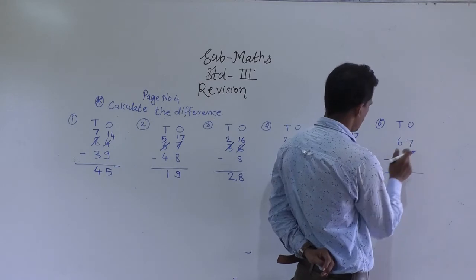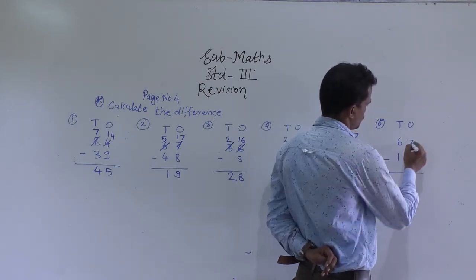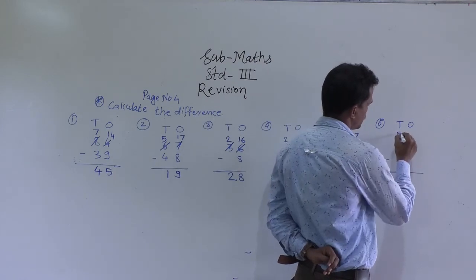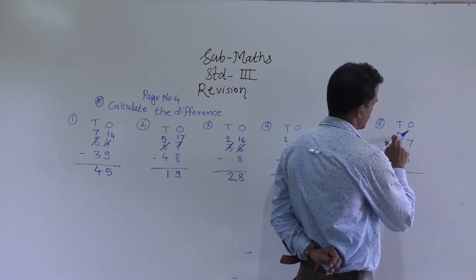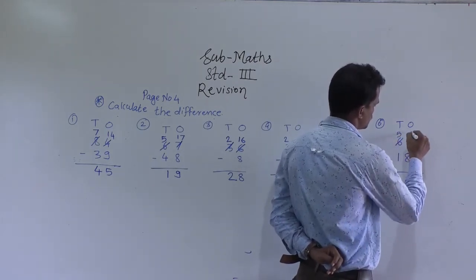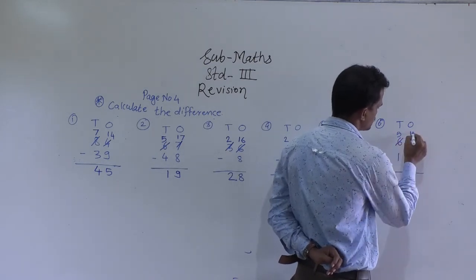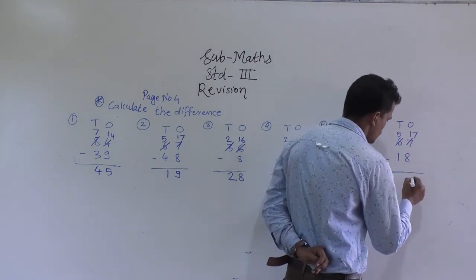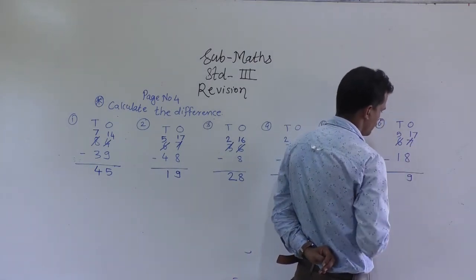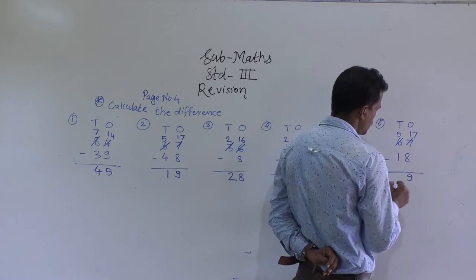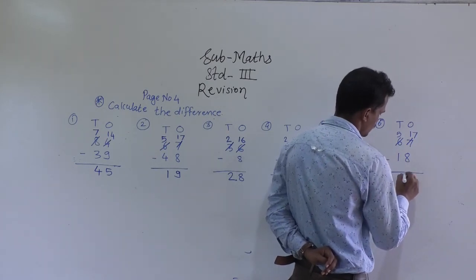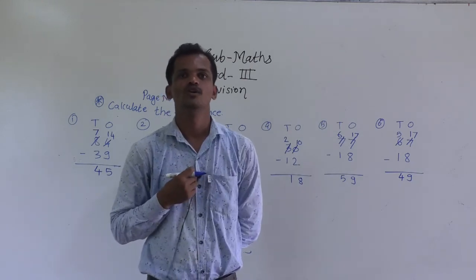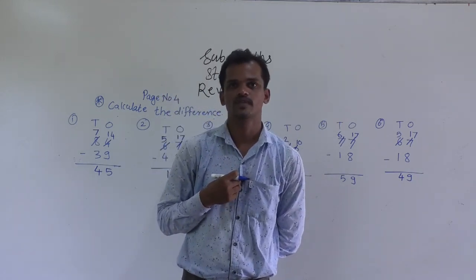Next example: 67 minus 18. 7 minus 8 is not possible. Regroup this 6 tens into 5 tens and 10 ones. Add those 10 ones into this 7 ones to get 17 ones. 17 minus 8 is 9, and 5 minus 1 is 4. So 49 is the answer. Remaining examples, you have to solve. Thank you.